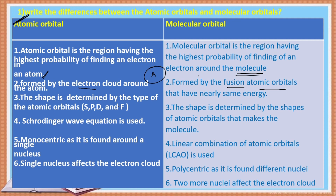The shape of atomic orbitals is determined by the type of atomic orbital — generally s, p, d, and f orbitals. In the case of molecular orbitals, the shape is determined by the shapes of the atomic orbitals that make up the molecule.